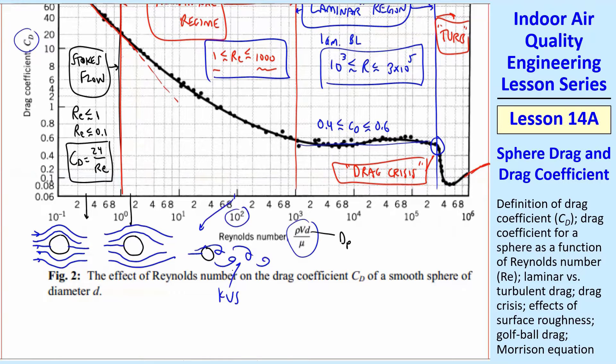That continues until this next regime, and what happens there is you have the wake starting to be turbulent. So in this region, before the drag crisis, you have a laminar boundary layer, but then you get a turbulent wake.